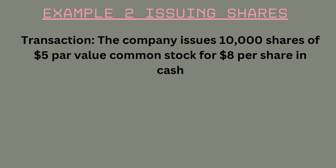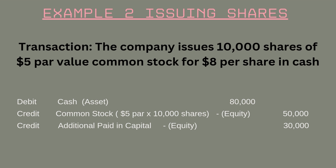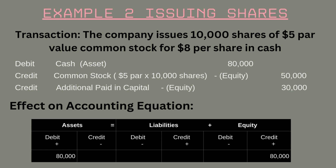Now let's look at an example of issuing shares. Suppose a company issues 10,000 shares of $5 par value common stock for $8 per share in cash. The journal entry to record this would be: debit cash for $80,000, credit common stock for $50,000, and credit additional paid-in capital (APIC) for $30,000. This transaction increases owner's equity by $80,000. The common stock increases by the par value of $50,000, and the additional paid-in capital increases by $30,000, which is the excess amount received over the par value. The total shareholders' equity therefore increases by $80,000, keeping the accounting equation balanced.